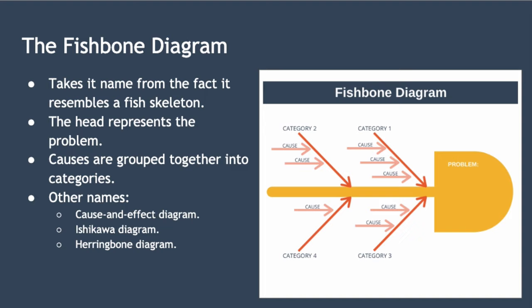The most common way to create a fishbone diagram is brainstorming with your team. The categories can be useful as they focus the discussion on a particular group of causes, rather than trying to consider all possible factors at the same time.